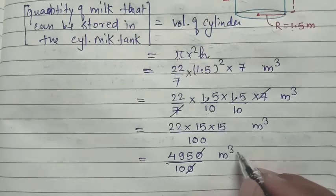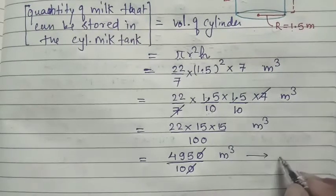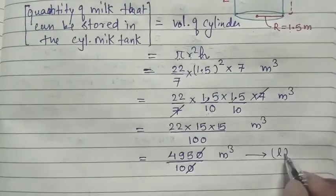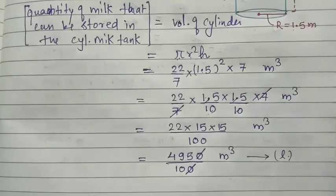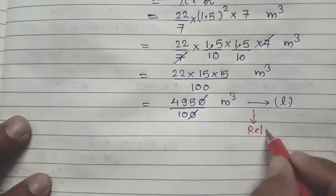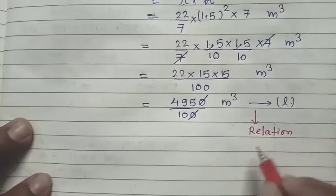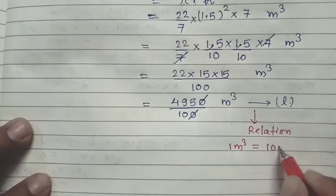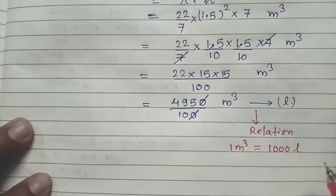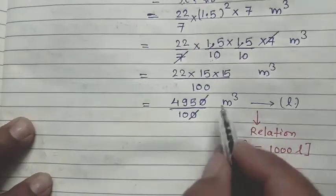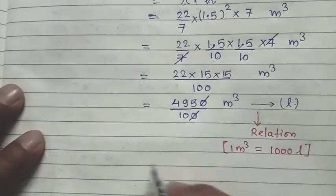Is zero se ek zero cancel ho gaya, toh answer aaya 595/10 meter cube. Lekin humein answer liters mein nikalna hai, jaise question mein diya hai. Toh meter cube aur liter ke beech mein jo relation hai, hum uska use karenge. Woh relation hai: 1 meter cube = 1000 liter.